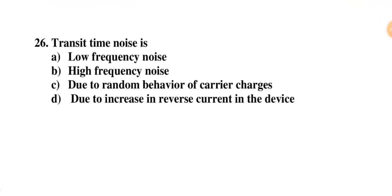Transit time noise is — low frequency noise, high frequency noise, due to random behavior of carrier charges, or due to increase in reverse current in the device. Transit time noise is high frequency noise, so B is the correct option.